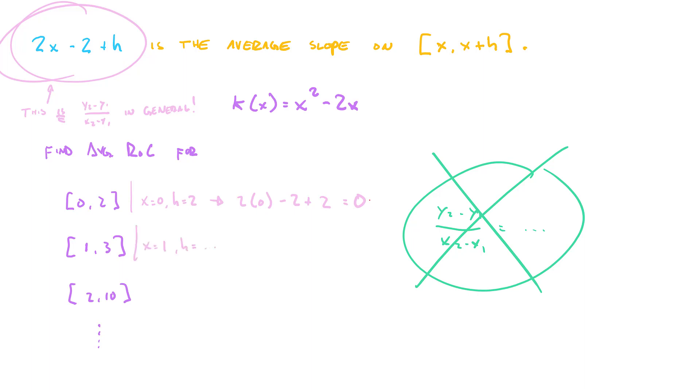Next one. x is equal to 1. h is equal to not 3, which you may be tempted to say. h is the distance between this lower bound and upper bound of the interval. The distance between these two things is 2. It's 1 plus 2. That's how we're getting 3. So then h is 2 again. So 2 times 1 minus 2 plus 2. Those just cancel again. So we just get 2.